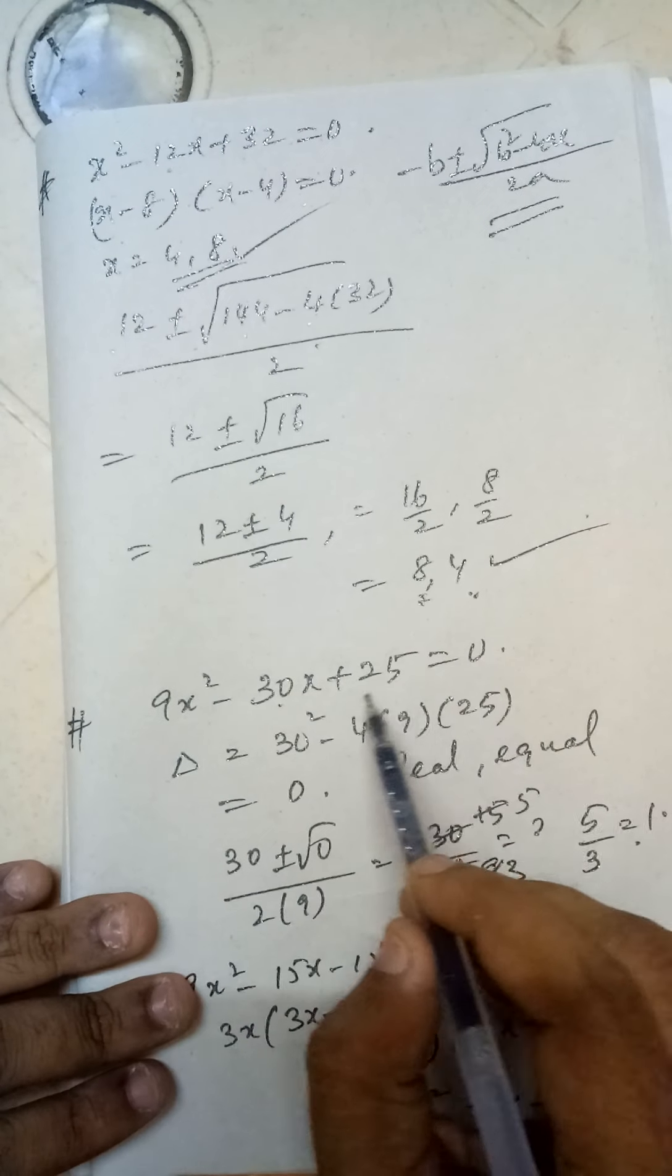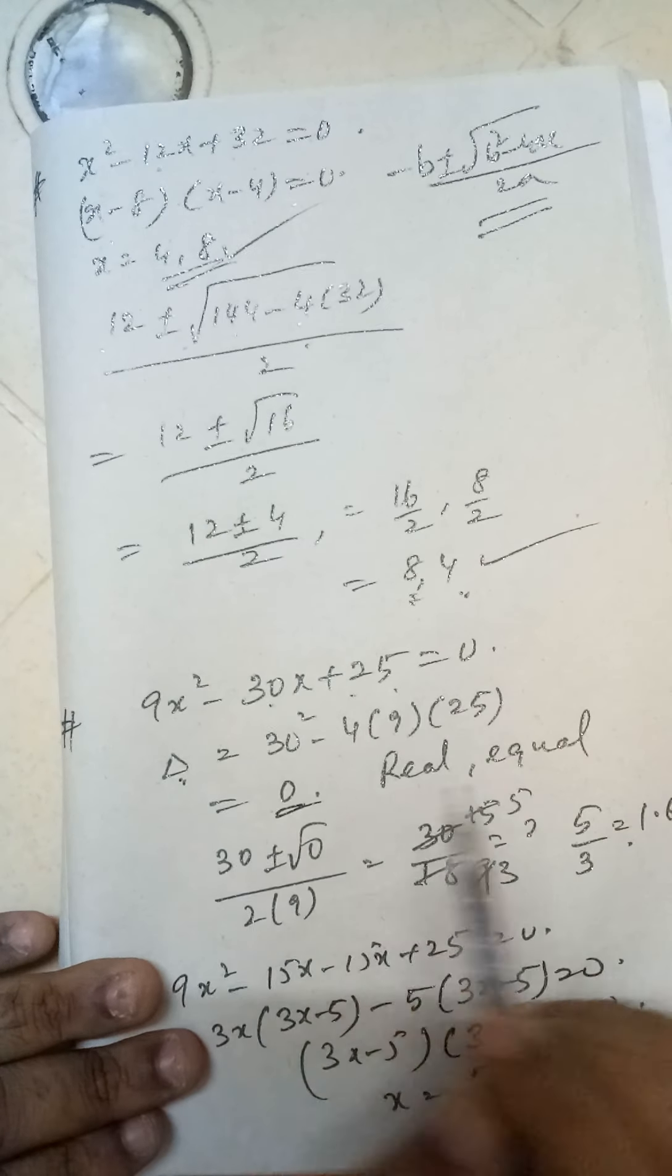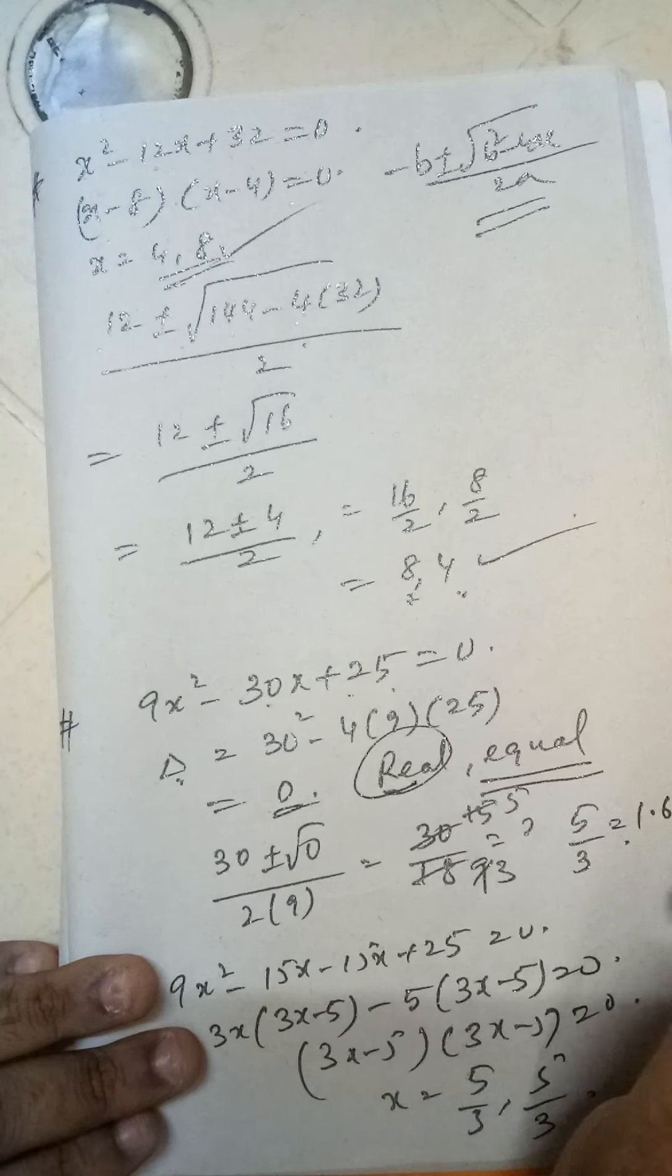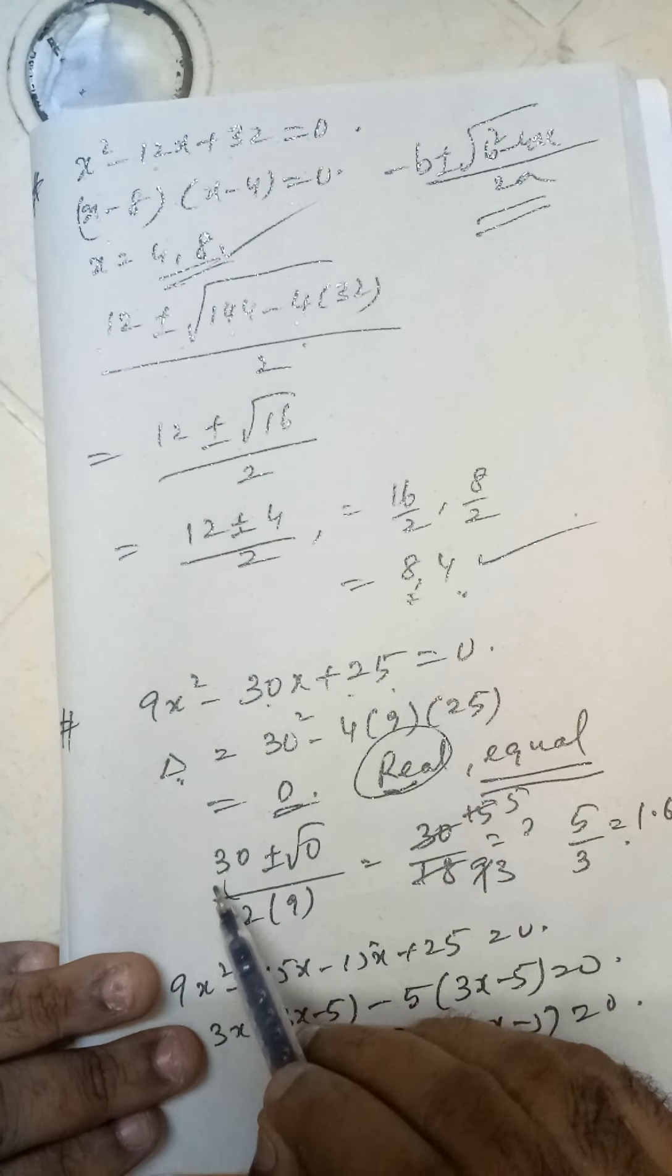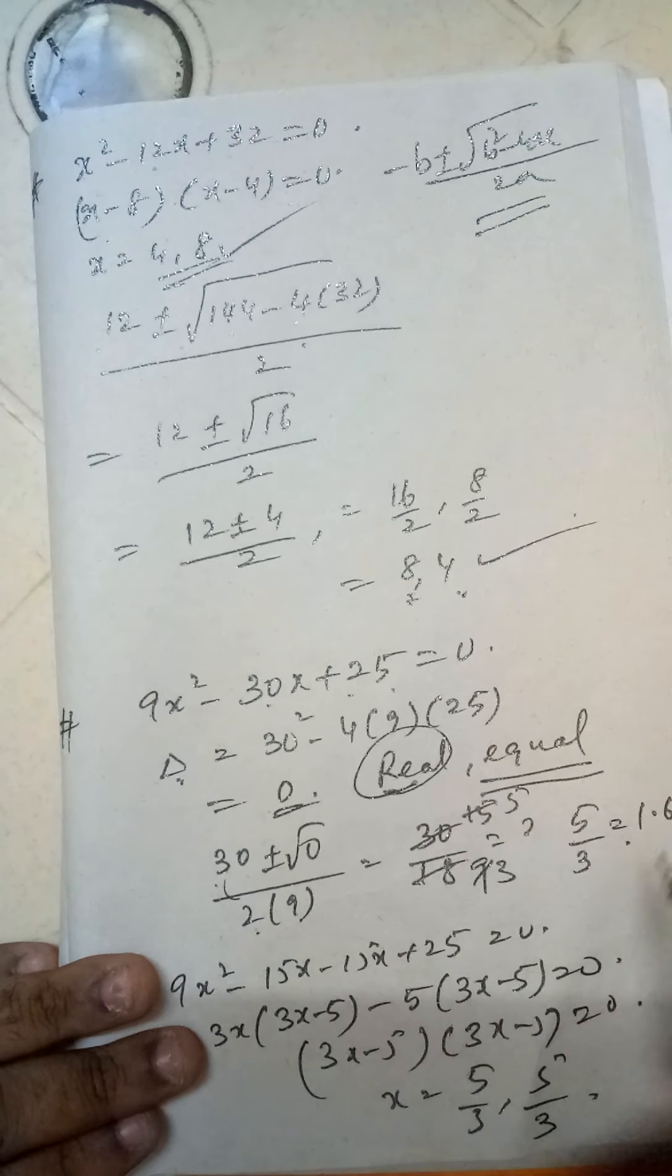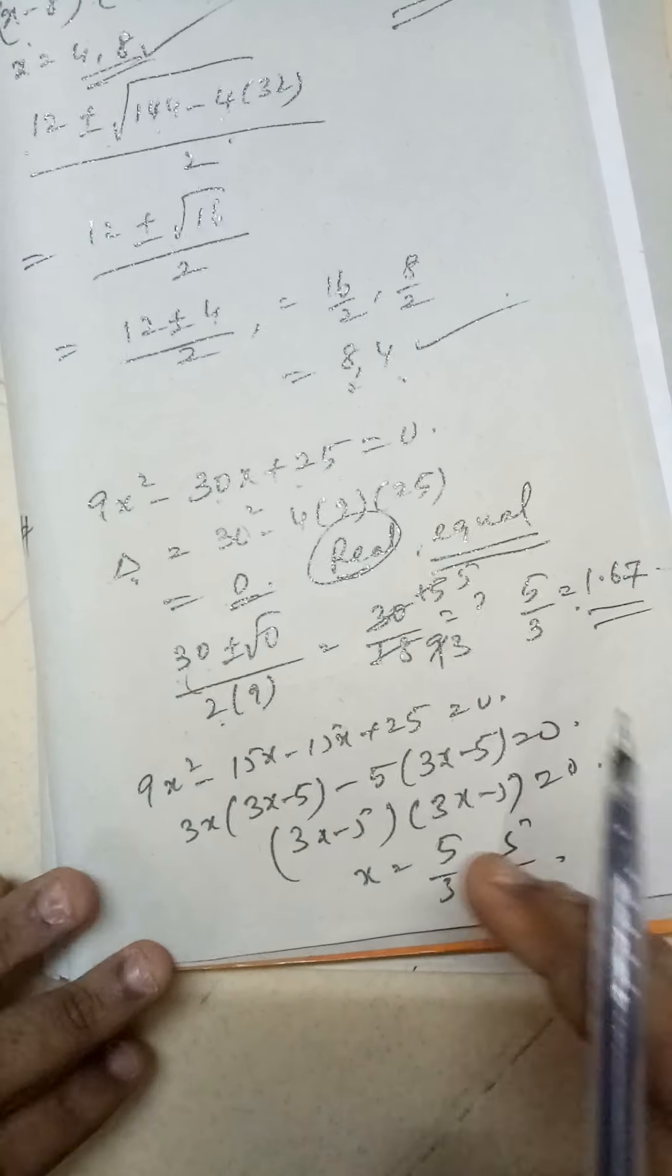9x² - 30x + 25 = 0. So if you find the discriminant value here, you are getting 0. That means the roots will be real and they will be equal. So if you calculate, you get (30 ± √0) / (2×9), you get 5/3 = 1.67. You can apply the method of factorization also.